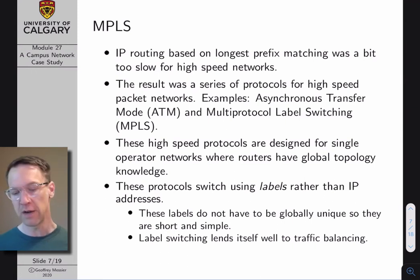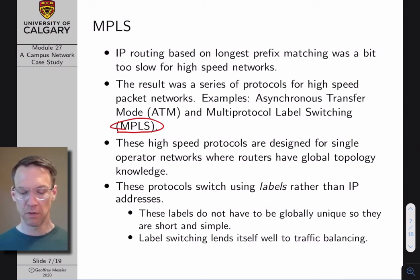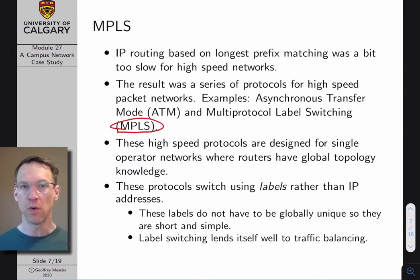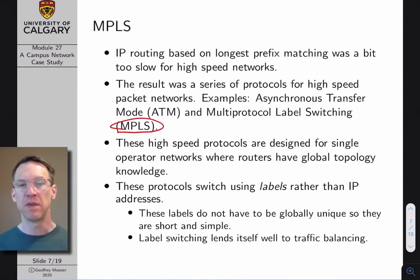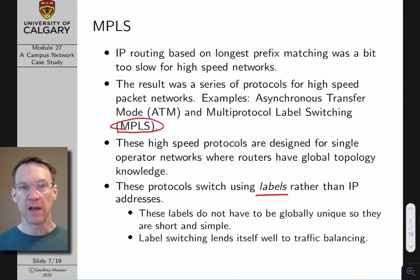There was activity around developing standards that could switch and route faster with a simpler addressing scheme. A few standards were developed — asynchronous transfer mode (ATM) and multi-protocol label switching (MPLS). MPLS is what the U of C has chosen for its core network. These high-speed protocols are designed to be used by a single operator to manage a very high-speed core-style network. IP packets entering the high-speed core are encapsulated within an MPLS packet. MPLS packets use labels rather than IP addresses — labels are shorter and don't need to be globally unique, making them simpler and amenable to higher-speed switching and routing.